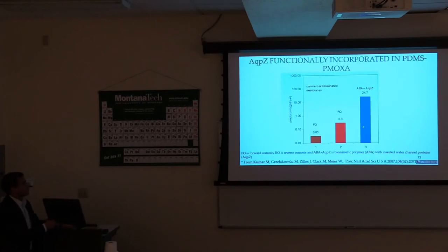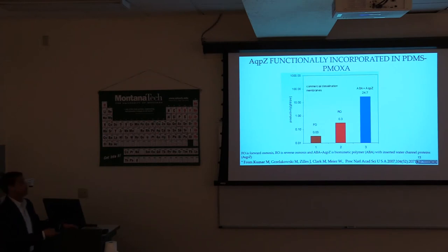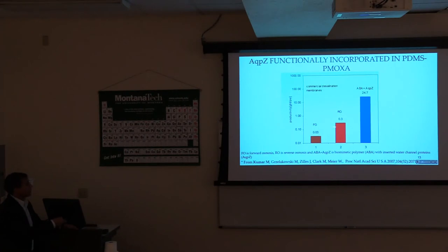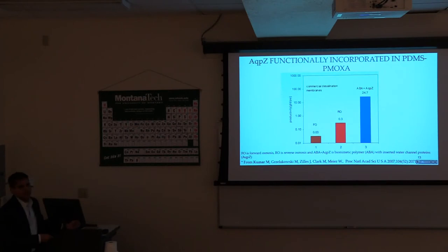We did a quick study where we put bacterial aquaporins into a block copolymer and measured its permeability. Aquaporins are present not only in our bodies but also in microbes, plants, and archaea. We showed that if commercial RO membranes have a certain permeability, aquaporin-based membranes can be almost two orders of magnitude higher. This paper created a lot of buzz. A company called me asking when I would commercialize it — but if you read my paper closely, the experiments were done with 100-nanometer hollow spheres with protein stuck in the wall. How are you going to make a membrane from that to treat hundreds of millions of gallons of water?